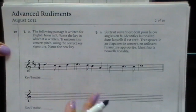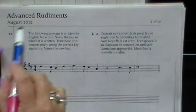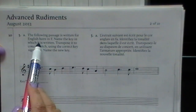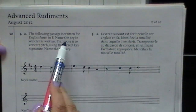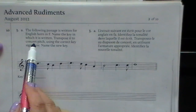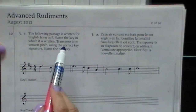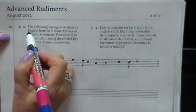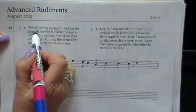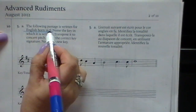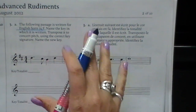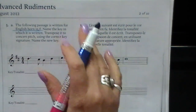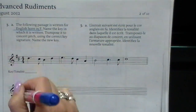Here is a question from the August Advanced Rudiments Exam. The following passage is written for English horn in F. Name the key in which it is written and transpose it to concert pitch using the correct key signature. Now the key part of this question is the English horn in F. All you have to think about is when you are transposing these instruments — they are transposing instruments, but we are going to transpose to concert pitch.